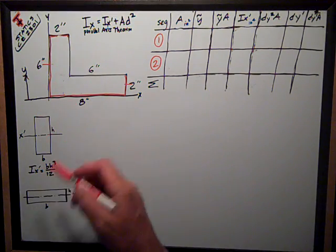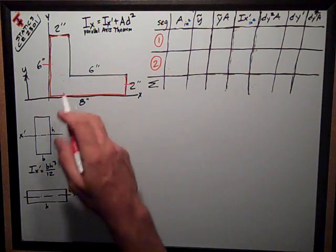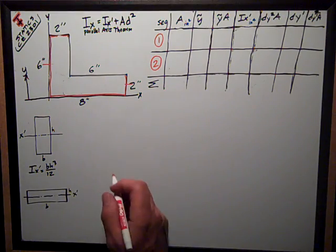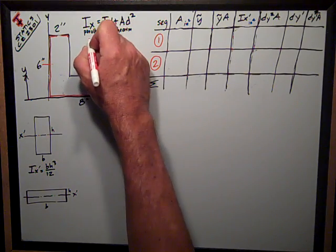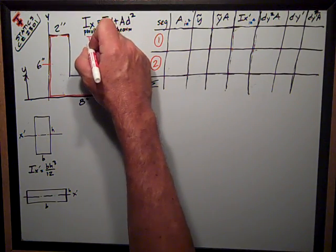The section we're going to deal with is this L-shaped thing, dimensions are given. And the first thing we want to know is, what's the moment of inertia about the x-axis?